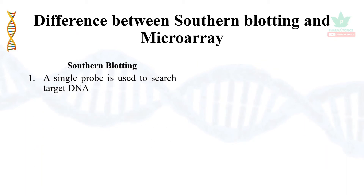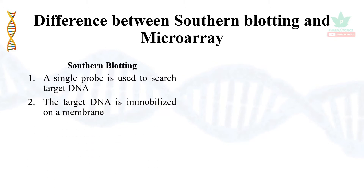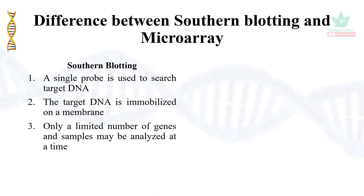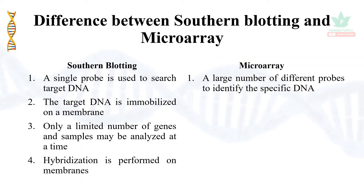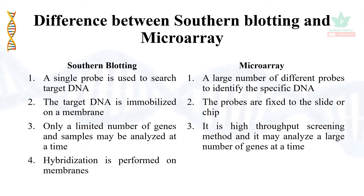In Southern blotting, the target DNA is fixed in a membrane. We can analyze the number of genes through hybridization on a gel and nitrocellulose membrane. In microarray, there is a larger number of probes. The probe is a DNA sequence fixed on a chip. Hybridization occurs on a chip or slide rather than a membrane, making it a microarray.